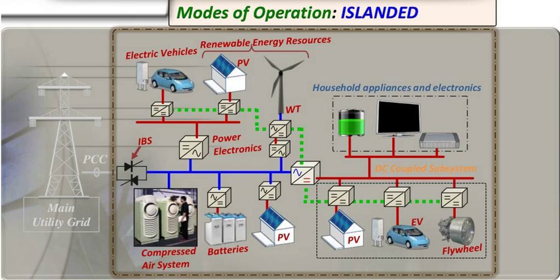Characteristics of Islanding Operations: Isolated Power Supply — the isolated portion of the electrical system operates as an independent microgrid, relying on local power generation sources and energy storage systems to meet the electricity demand within that area. Limited Power Resources — in islanding mode, the available power generation sources are limited to what is present within the isolated area.